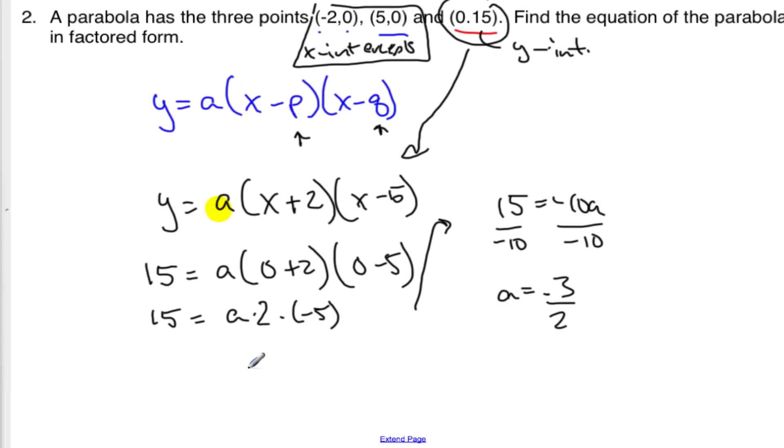And so, to answer the final question, put it in factored form. y equals negative 3 over 2, x plus 2, x minus 5.